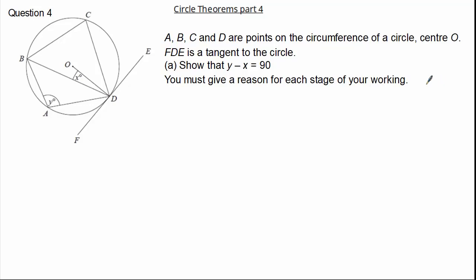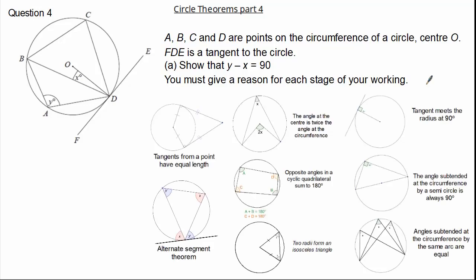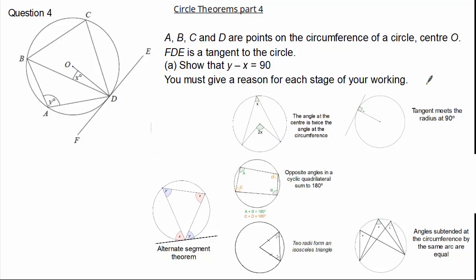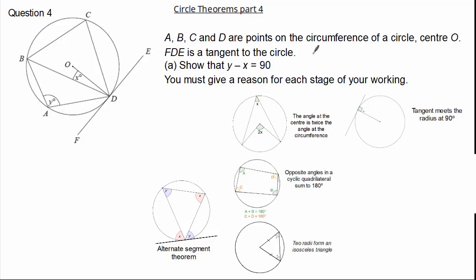Here it's important to extract as much information as possible from the question to identify which circle theorems we can use. Here you can see we do not have a diameter, no point outside of the circle, no angle subtended by the same arc. Therefore that leaves us with five potential circle theorems, indicating there is more than one way to show this answer. I am going to show you one way in which we can achieve Y minus X equals 90 degrees.